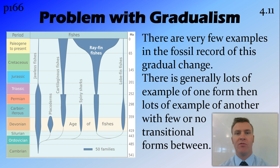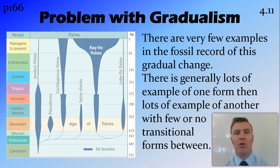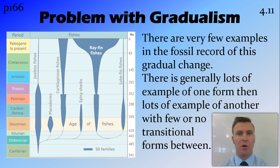The problem is that these transitional forms are actually very rare in nature, so there's not very much evidence to support this gradual change. Generally, what we have is lots of one particular type of form — for example, the very small horse — and lots of the end form, the big horse, with very few or no transitional forms between.